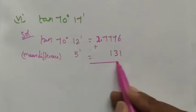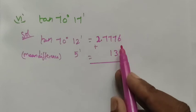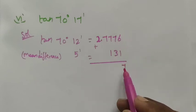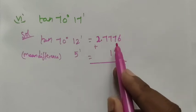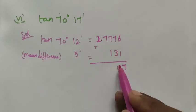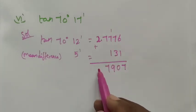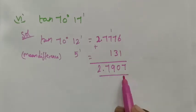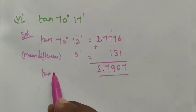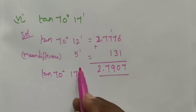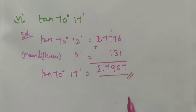We will clearly know tan. And now with the mean difference, I have: 6 plus 3 is 7, sorry, 6 plus 1 is 7, 7 plus 3 is 10, 0 remainder 1, 8 plus 1 is 9, and then 7. That is 2.7907 for tan 70 degree 17 minutes is the answer.